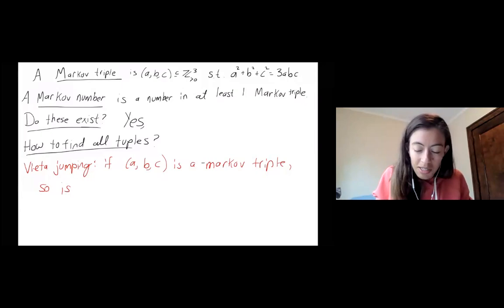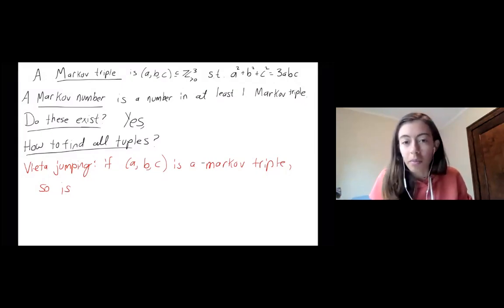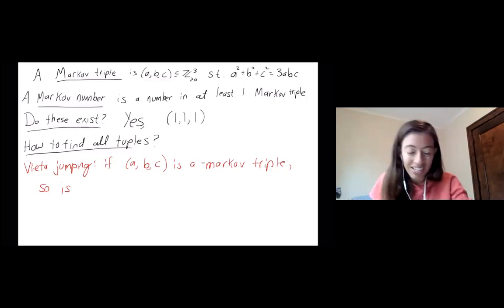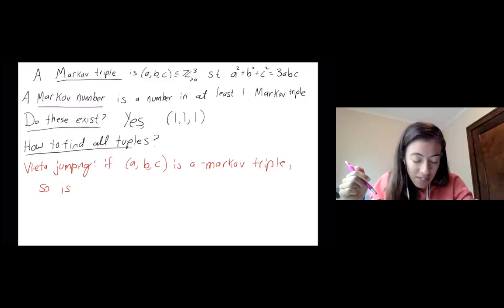And then a Markov number is a number that's in at least one Markov triple. And do these exist? And Ryan gave it away. There's at least one, right? There's the sequence of all ones.